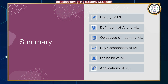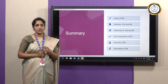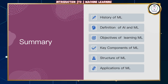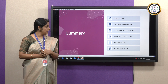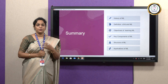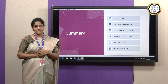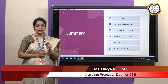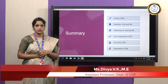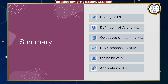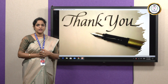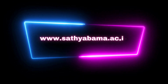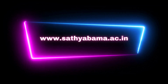A quick summary of what we saw today. We saw important events that made machine learning what it is today. We saw the basic definition of artificial intelligence and machine learning. Then we saw the need for learning machine learning and the key components — the training and the testing phase. Then we saw the structure of machine learning and how a machine learning algorithm processes the input data fed into it. And finally, we saw the applications of machine learning. Thank you.